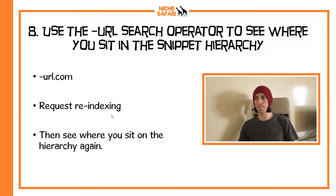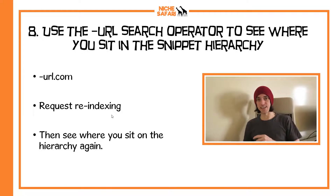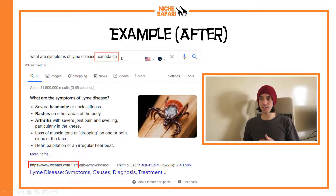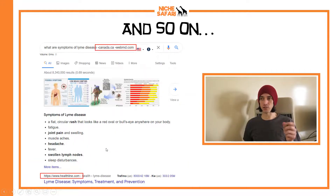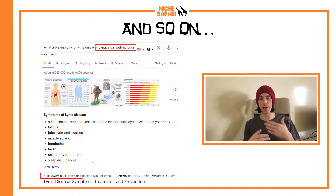Tip eight (bonus): use the minus URL search operator to see where you sit in the snippet hierarchy. If you're trying to steal the snippet and haven't won it yet, type minus then the URL of whoever currently holds the snippet to see if Google would take you as the second-best option. Then request re-indexing in Google Search Console and check again. For example, for 'what are the symptoms of Lyme disease,' Canada.ca currently ranks first. Add '-canada.ca' and WebMD becomes number one. Add '-webmd.com' and Healthline is next. You can slowly climb the hierarchy by making improvements and re-indexing.